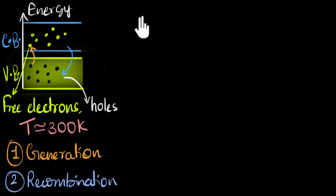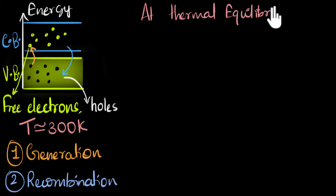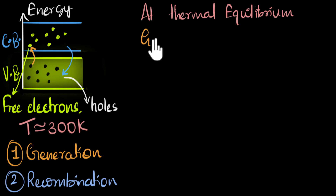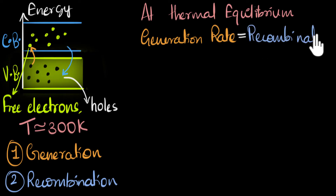So we can say that at any temperature — at thermal equilibrium, meaning at constant temperature — the number of electron-hole pairs created per second should be equal to the number destroyed per second, on average. In other words, the generation rate, which is the rate at which electron-hole pairs are created, must equal the recombination rate.